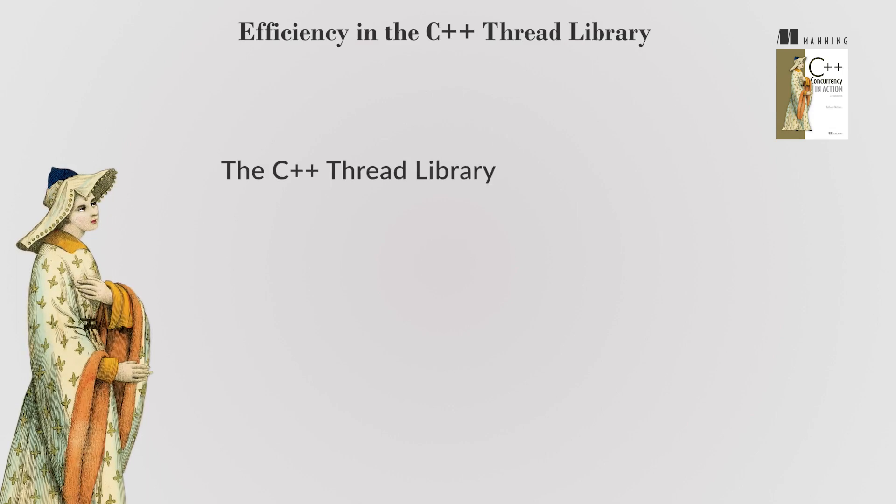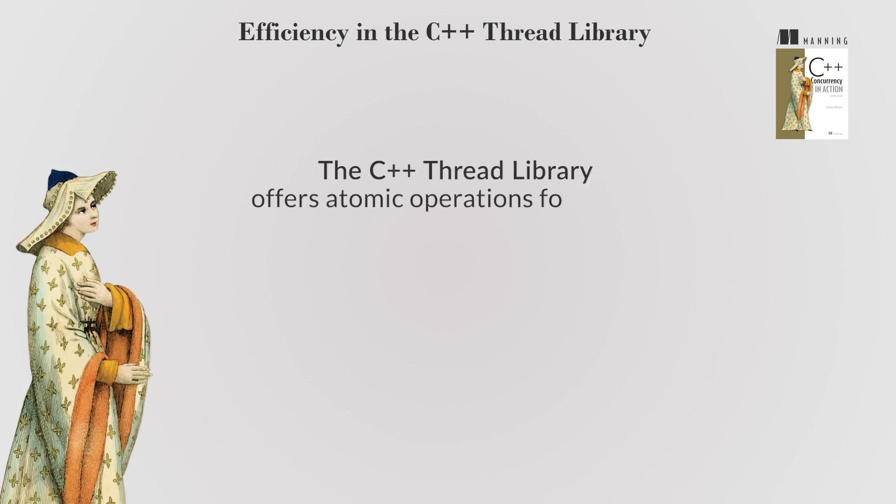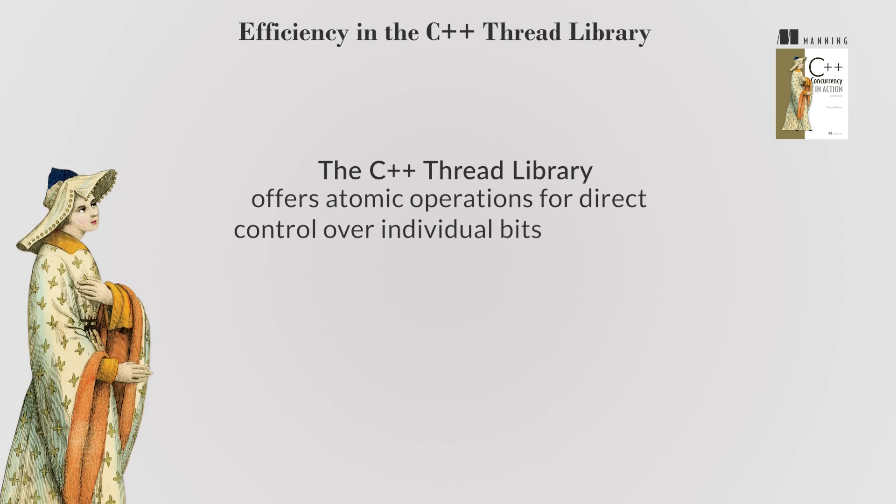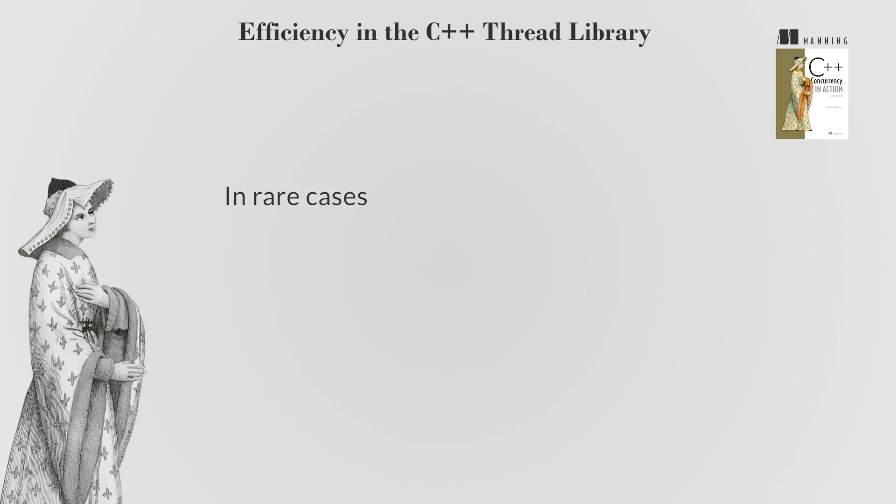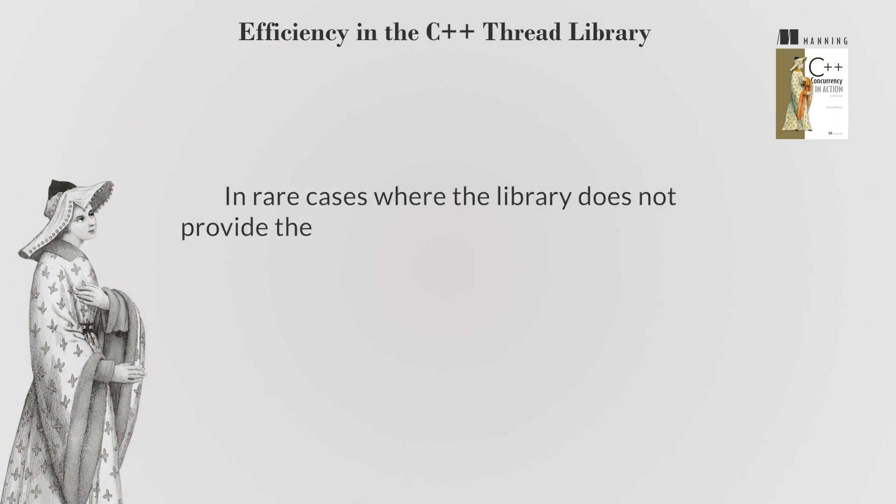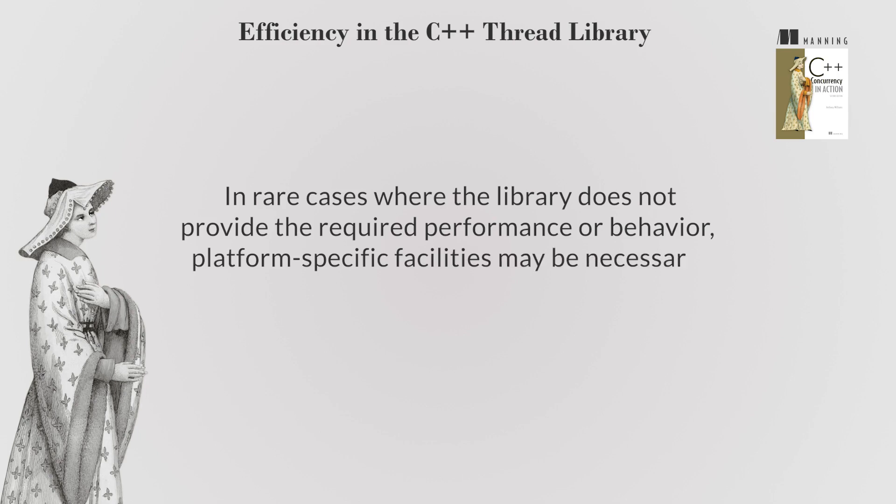The C++ thread library is designed for efficiency and provides low-level facilities for high-performance computing. It offers atomic operations for direct control over individual bits and bytes, making code more portable and easier to maintain. In rare cases where the library does not provide the required performance or behavior, platform-specific facilities may be necessary.